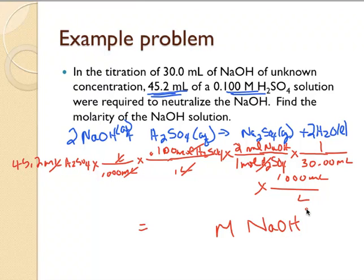In my calculator, I want to take the 45.2, divide by 1,000, times 0.1, times 2, and then divide by 30, and then multiply by 1,000. And the answer I get is 0.3013. I'm going to need three sig figs, so this should be reported as 0.301 molar sodium hydroxide. Alrighty.